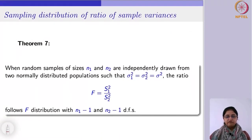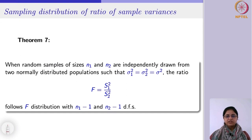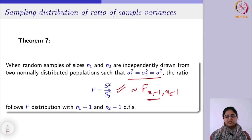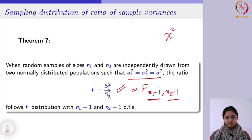The theorem says that when random samples of size n1 and n2 are independently drawn from two normally distributed populations such that their variances are equal, the ratio s1-squared over s2-squared follows F-distribution with n1 minus 1 and n2 minus 1 degrees of freedom. By definition, this means n1 minus 1 degrees of freedom comes from the numerator and n2 minus 1 from the denominator.